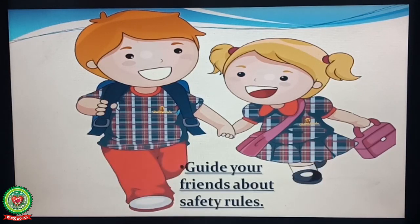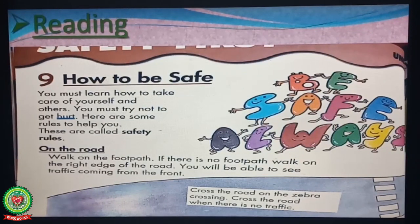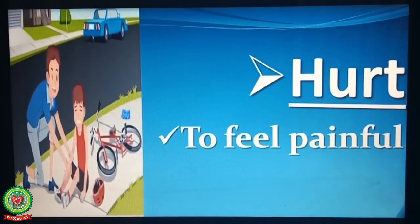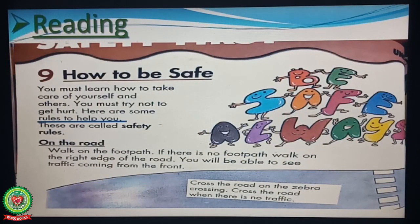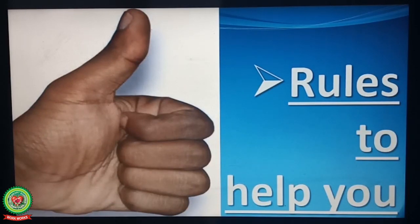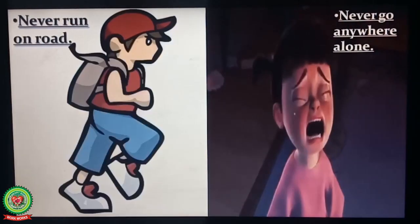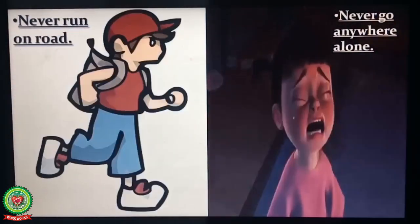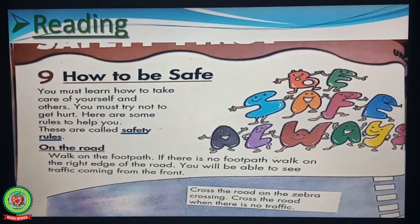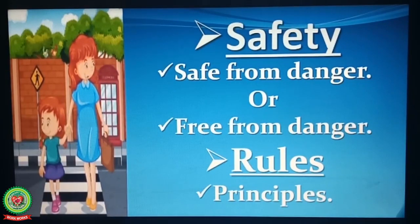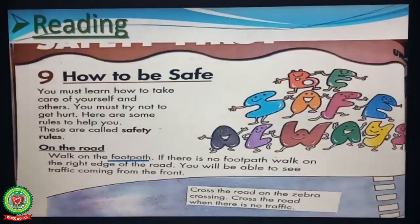You must try not to get hurt. Underline the word 'hurt' and write down its meaning: to feel painful. Here are some rules to help you: never run on road, never go anywhere alone. These are called safety rules. Underline the words 'safety' and 'rules' and write down their meanings. Safety means safe from danger or free from danger. Rules means principles.